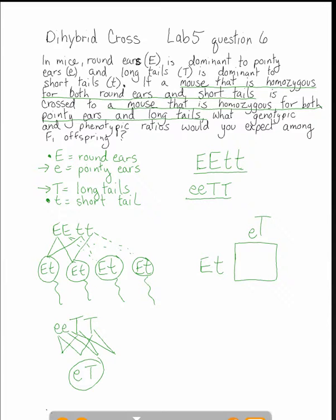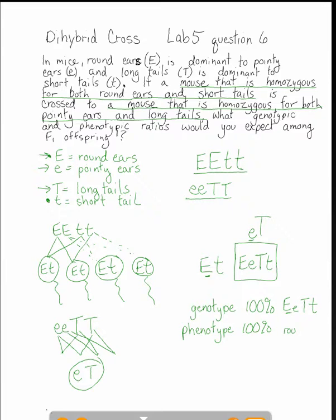These are the gametes — sperm on one side, egg on the other. When they come together, we put the genes back together: the E and the e, then the big T and the small t. By convention, we put the dominant gene first. So the genotype of the offspring is going to be 100% big E, small e, big T, small t. The phenotype is 100% round ears, since we have one copy of big E, and long tails, since we have big T.